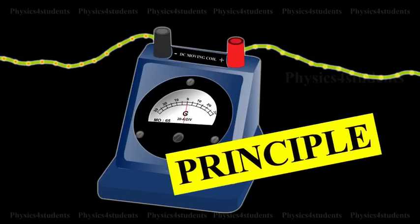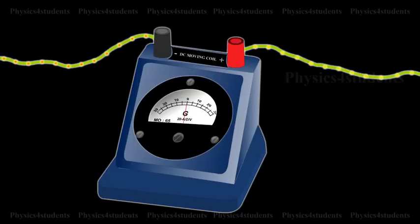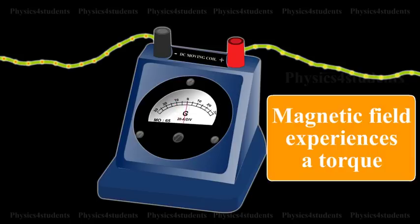Principle: Moving Coil Galvanometer works on the principle that a current-carrying coil placed in a magnetic field experiences a torque.